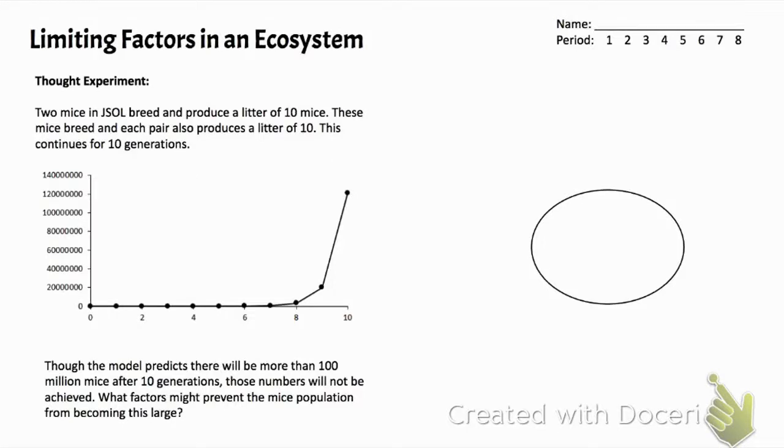Welcome back. In this lecture we're going to talk about how populations of organisms grow in an ecosystem, but we're also going to talk about why these populations don't grow as fast as we might expect them to. Really what we're going to talk about are limiting factors.